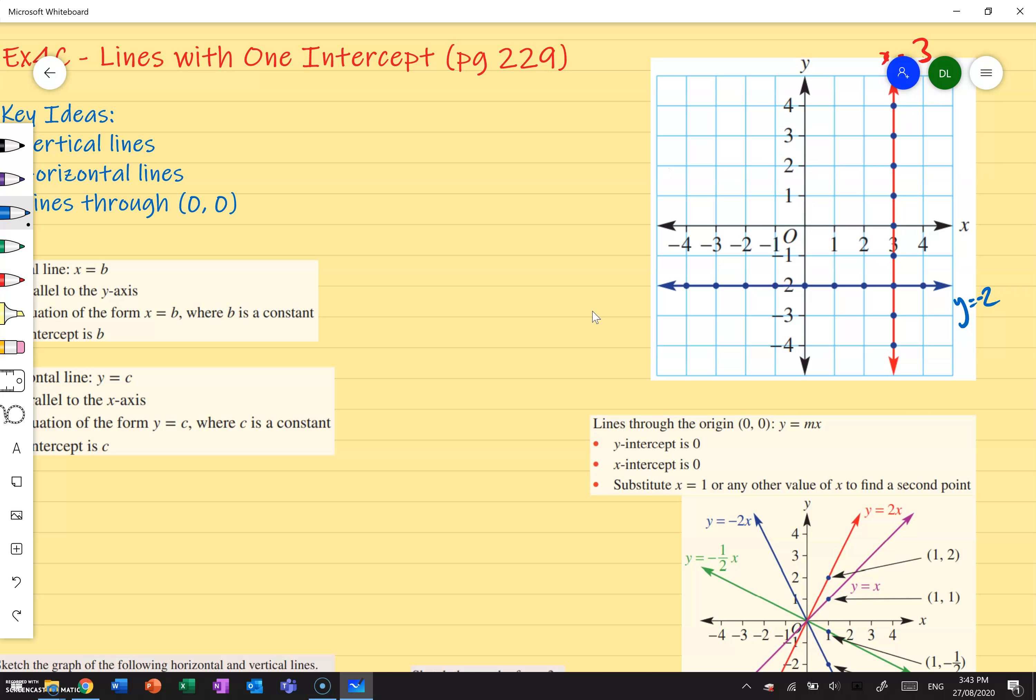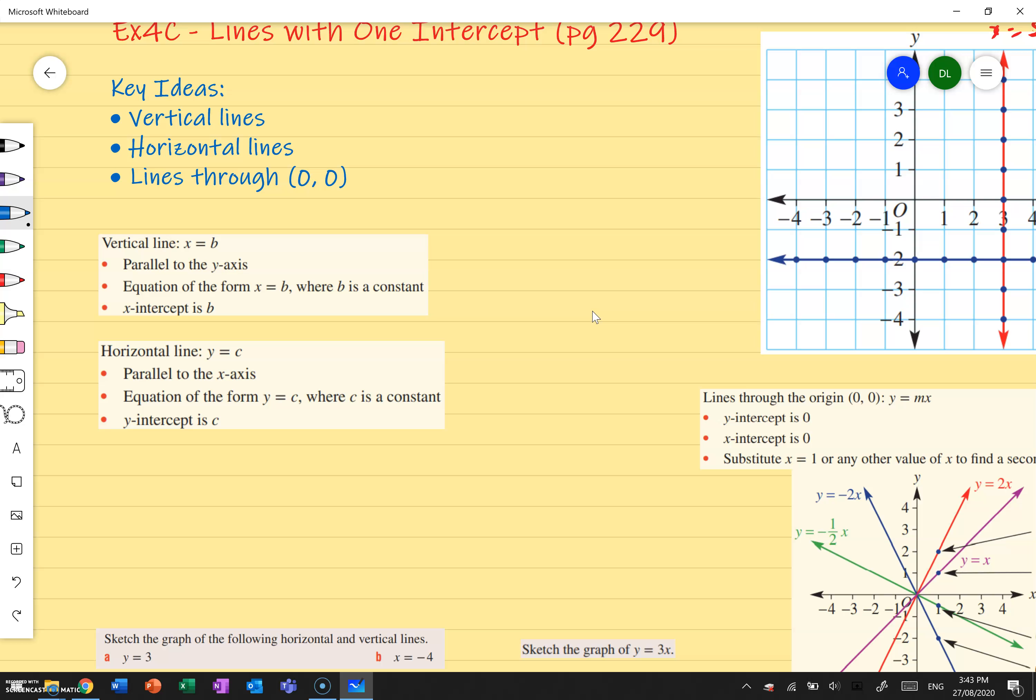Okay with that in mind let's go ahead and look at the formulas. So we talked about how the vertical line is x equals to whatever and our horizontal line is y equals to whatever. Now once again we're just using b and c as placeholders, but it's important to understand that b we're going to call our x-intercept and c we're going to call our y-intercept.